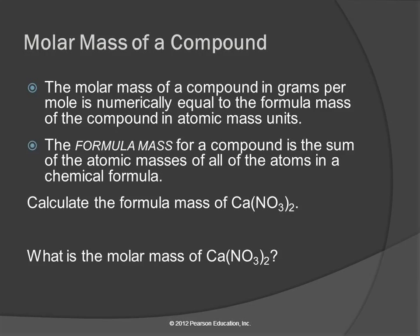and that's 40.08 atomic mass units. There are two nitrogen atoms, and each nitrogen atom is 14.01 atomic mass units. And then how many oxygens are there? Six.